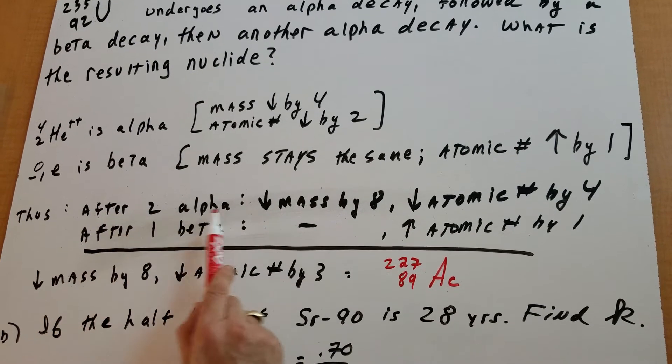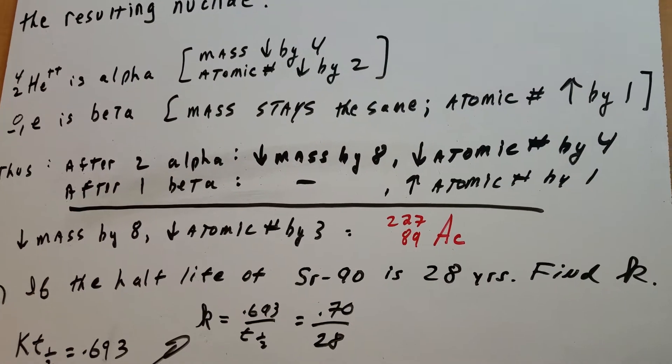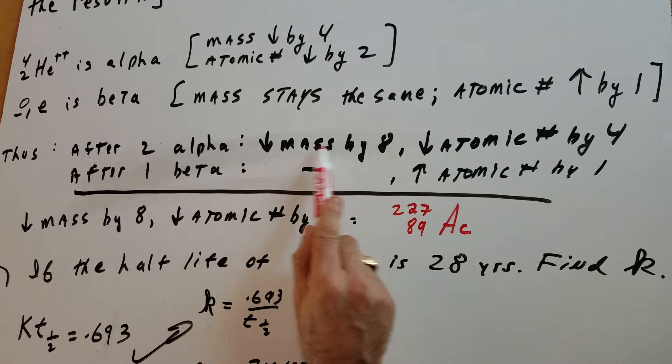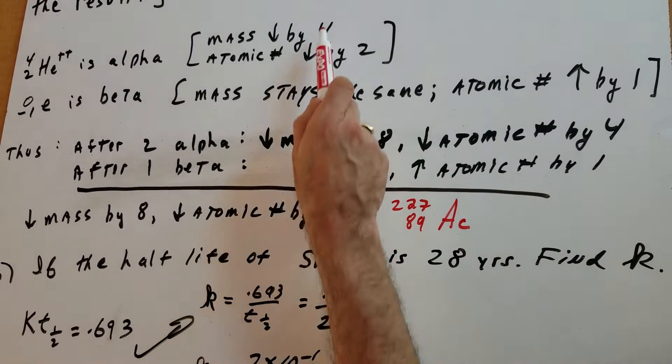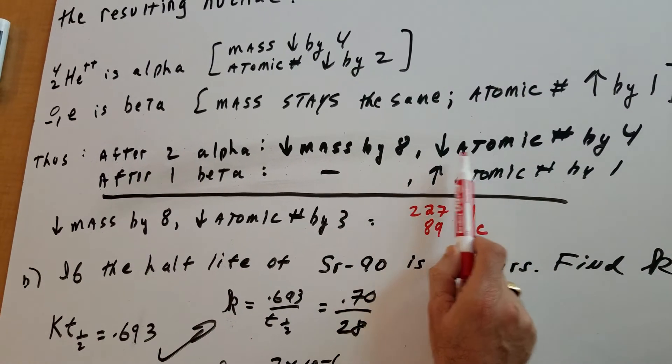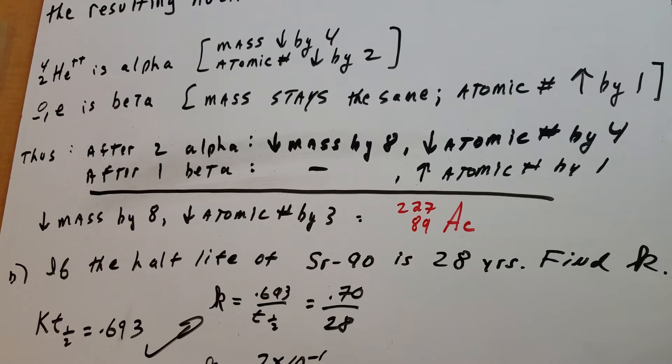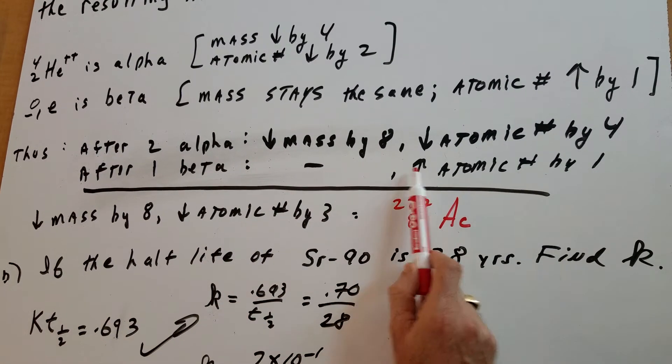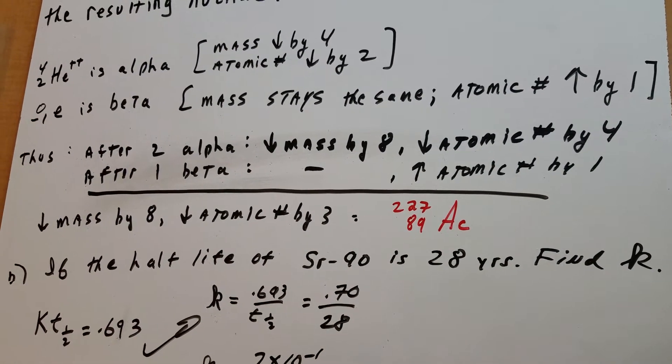So I wrote to you the solution here to speed this up a little bit, but in two alpha decays, we're going to have the mass going down by 8, because each one, the mass went down by 4, and there was two of them, and the atomic number goes down by 4. After the beta decay, the mass doesn't change, but the atomic number increases by 1.